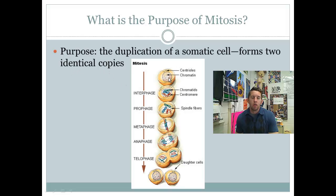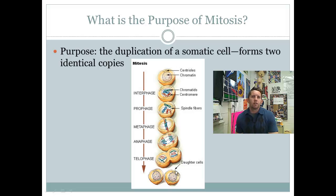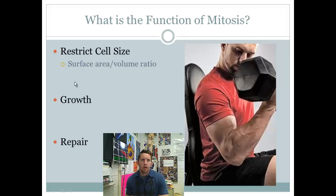We have our original somatic cell — let's say it's a skin cell. You want to produce two new functional skin cells. You don't want to produce two new bone cells or two new liver cells; you want to produce two new skin cells. There are various reasons why you'd want to do that.